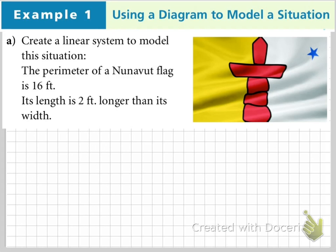In example 1, here we have a diagram modeling a situation. Let's create a linear system to model this situation. The perimeter of the Nunavut flag is 16 feet.